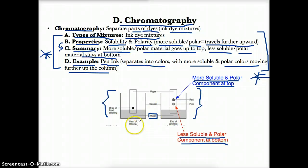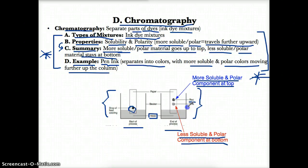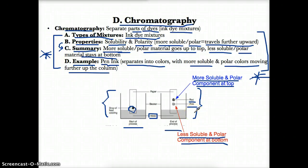For example, let's say we have a drop of food coloring and we want to separate it. We dip the paper in water and eventually you'll see that red goes further up to the top and pink stays at the bottom. The idea is that red, being more soluble and polar, travels further up, whereas pink, being the less soluble and less polar component, stays further down towards the bottom.